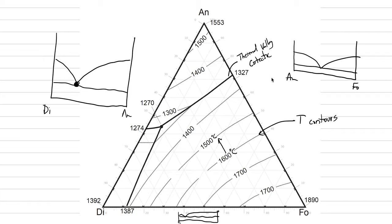That thermal valley is known as a cotectic. A cotectic is a place where two phases are crystallizing. Here's another cotectic, this dark line — a thermal valley — and here's another cotectic. Where the three thermal valleys all come together to that point right here, that is the ternary eutectic.